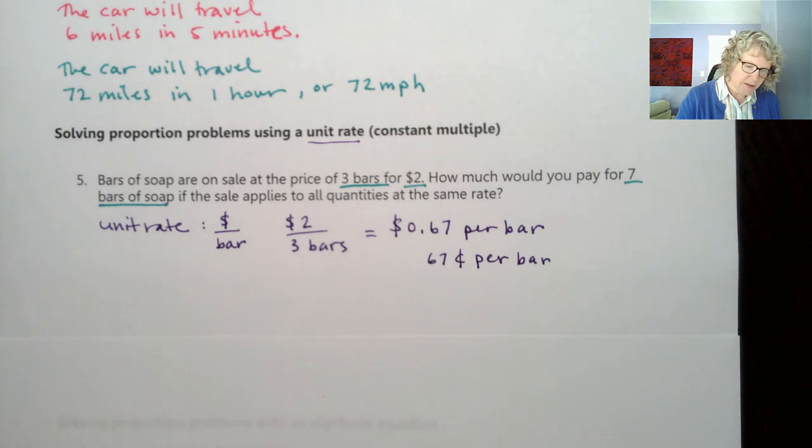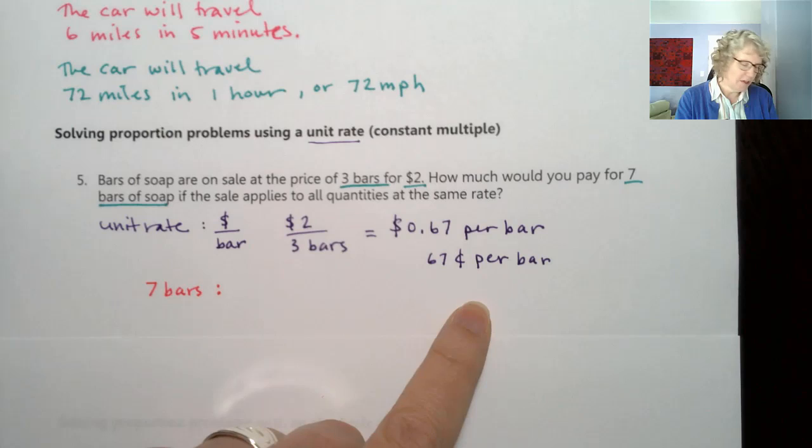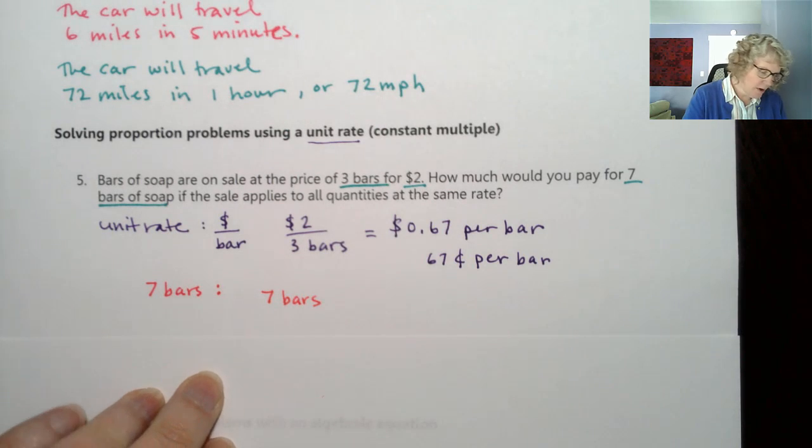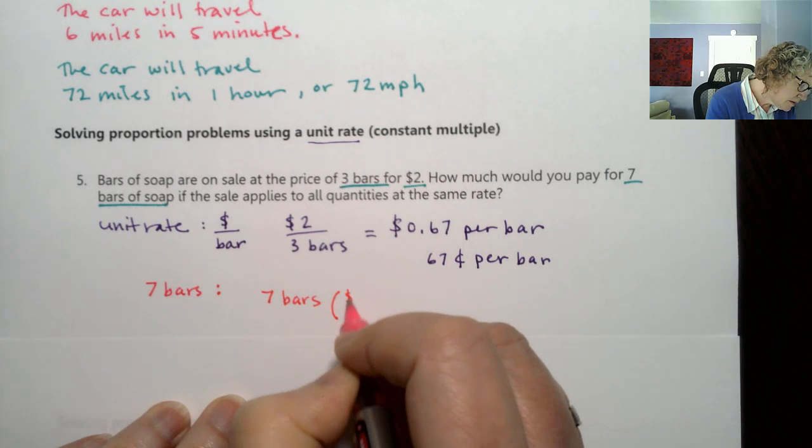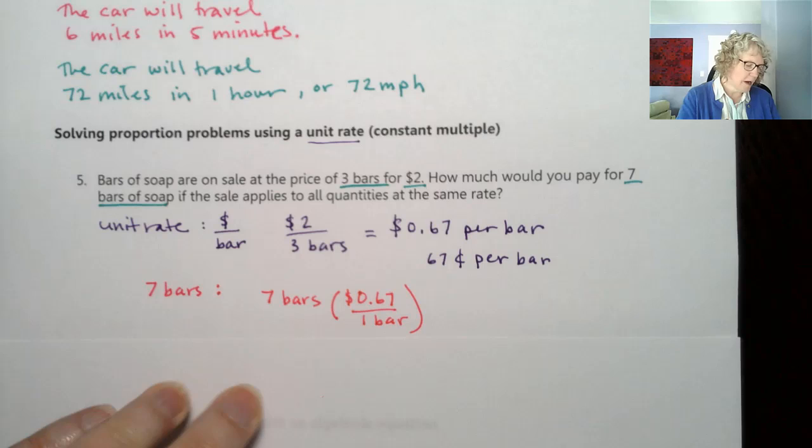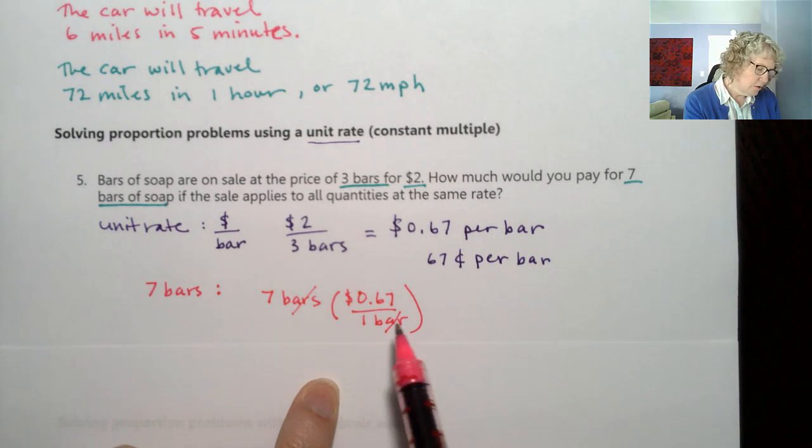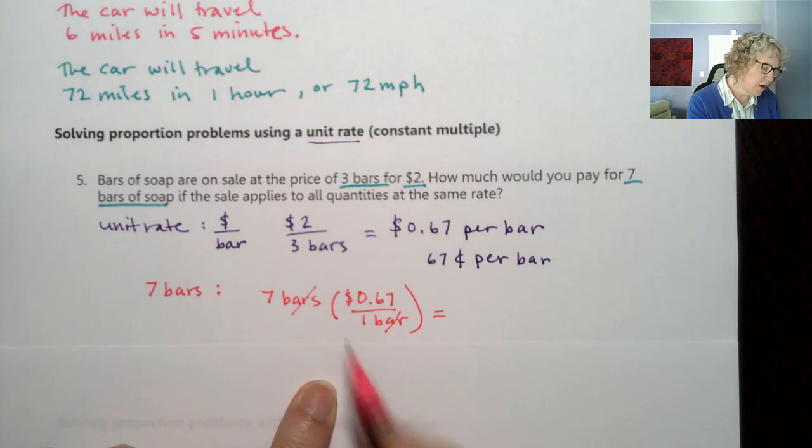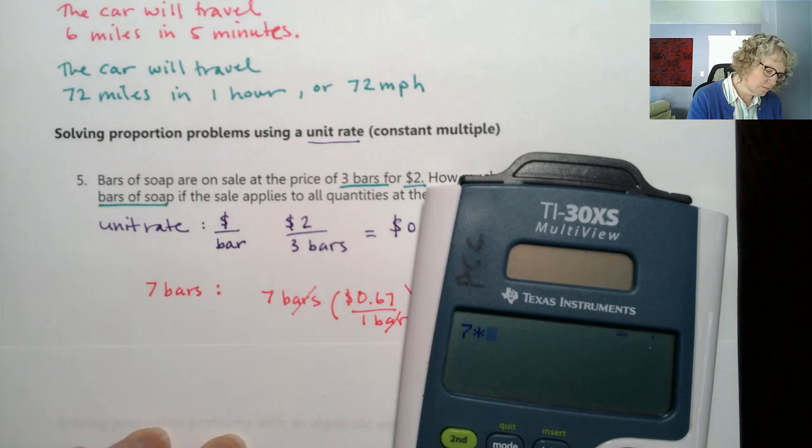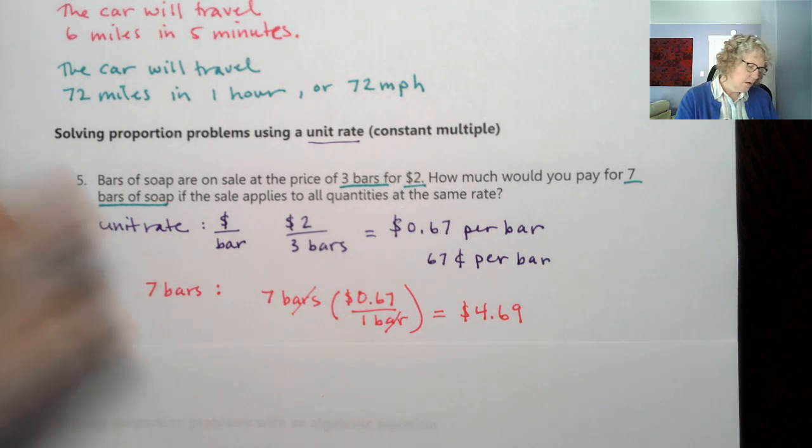We've got our unit rate, but now what we really want to know is 7 bars. The great thing about this is we multiply this by 7 because we've got 7 bars. I'm going to take 7 bars times 0.67 dollars per 1 bar. The reason I'm writing it out as a fraction is just to show you how the units are going to cancel. So if I do 7 times 0.67, I get 4.69 for 7 bars.